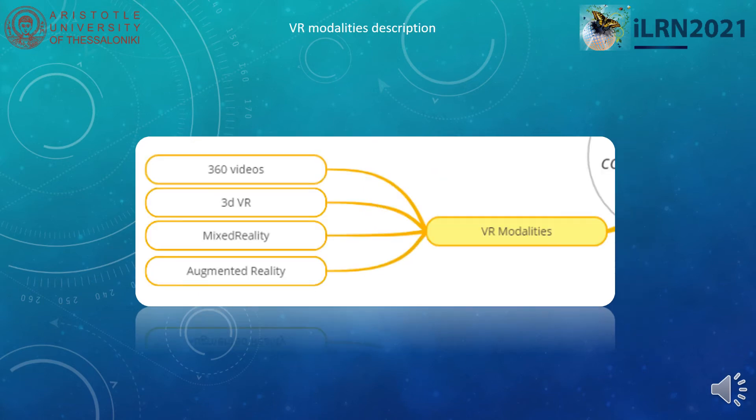Finally, we reach the VR modalities tab, which describes what kind of XR resource we have: 360 videos, 3D VR, mixed reality, and augmented reality. A quick note — mixed reality is different from augmented reality. In our conceptualization, it is the difference between the capacity to interact between the digital and physical world, while augmented reality is just digital augmentation without fully identifying the 3D space that these augmentations exist in.